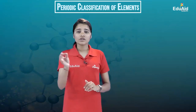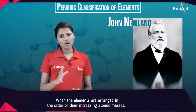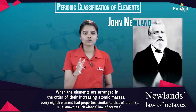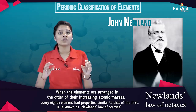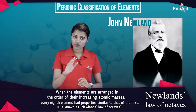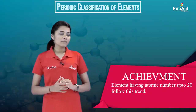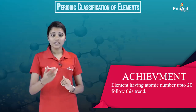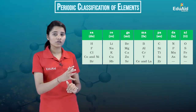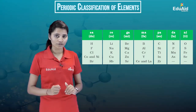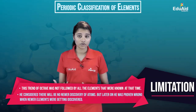The next good attempt to classify the elements was done by Newlands. He found that when elements are arranged in order of increasing atomic masses, the eighth element was found to have properties similar to that of the first element. This is known as Newlands' Law of Octaves. The achievement was that elements with atomic number up to 20, that is till calcium, were found to follow this trend. However, the limitation was that all elements known during his time did not follow this trend.